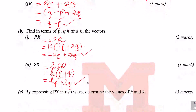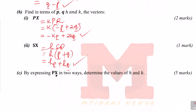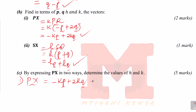Part C: express PX in two ways to determine the values of H and K. The first expression is already from part B: PX equals negative Kp plus 2Kq. For the second expression, we move from P to X via P to S then S to X.